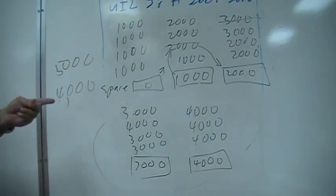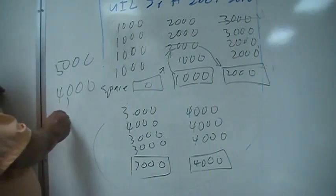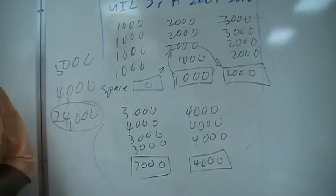And six times five is thirty so six times four your answer is going to be twenty-four thousand. Twenty-four thousand miles on every tire.